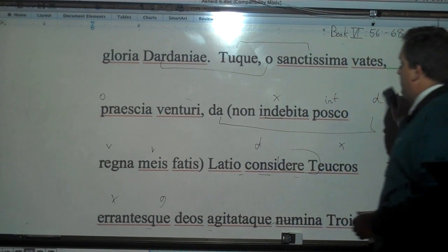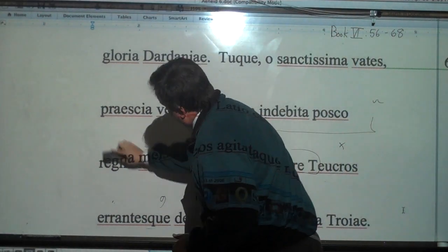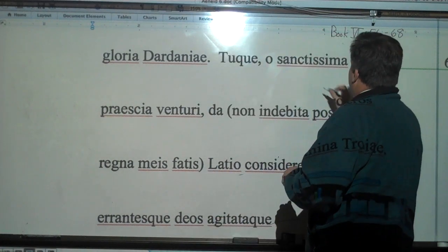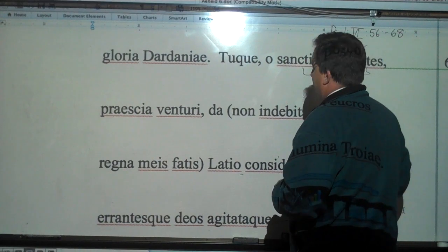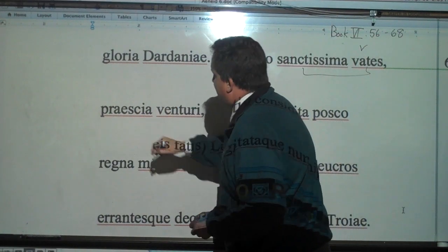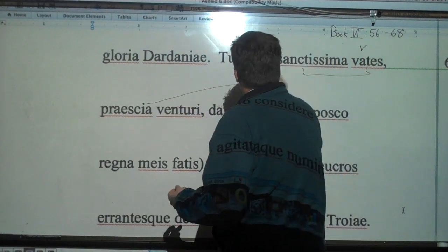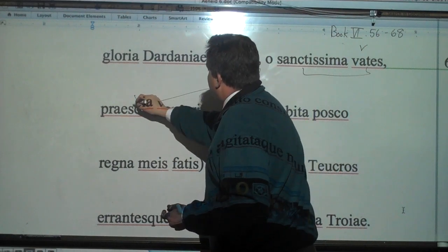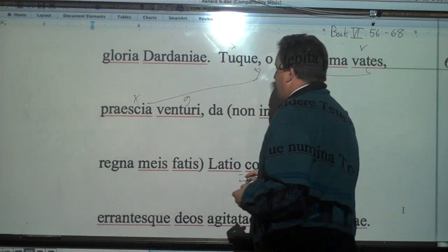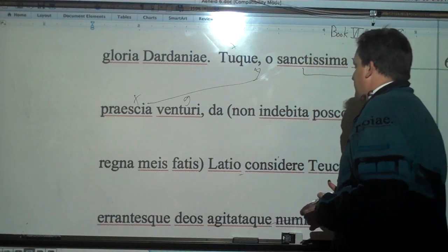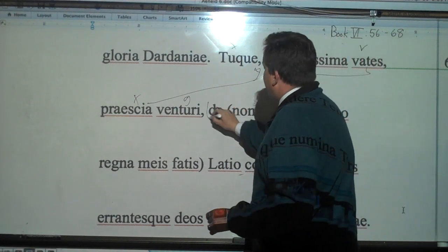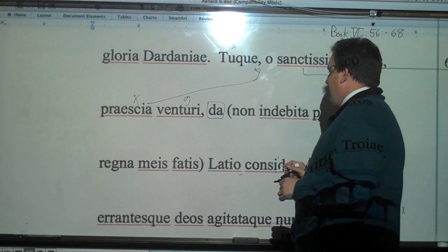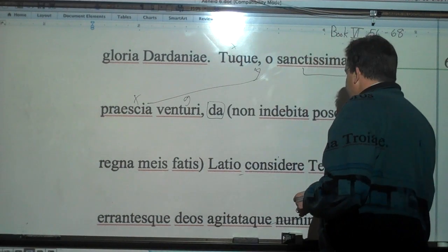o sanctissima vates. And you, o most holy prophetess. That's a vocative. Praescia, like for knowing. It's an adjective describing you and prophetess. This is a vocative. And you, knowing praescia venturi, of the thing about to come, so it's of the future. Grant. Da. Now, remember, da means give, of course, but really can mean grant or allow.